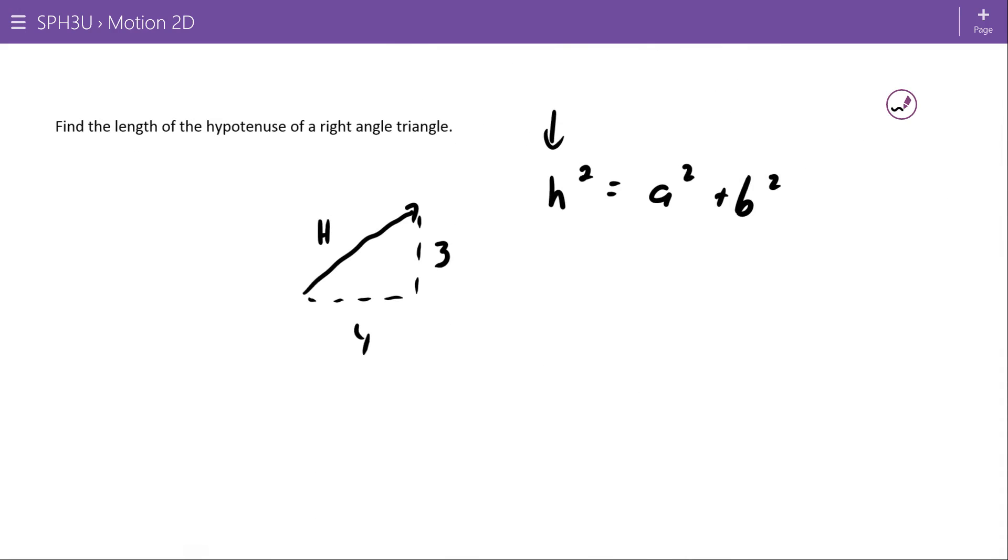I write the Pythagorean theorem as h squared equals a squared plus b squared. And that reminds me that it needs to be my hypotenuse that is alone on the left-hand side of this equation. Putting my 3 and my 4.